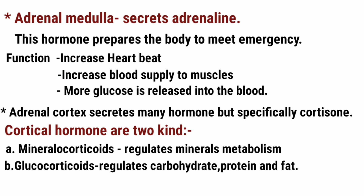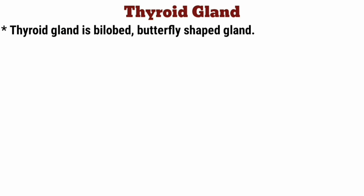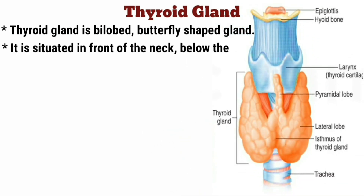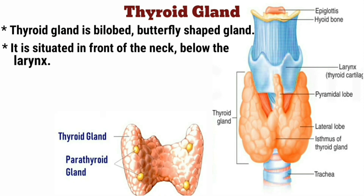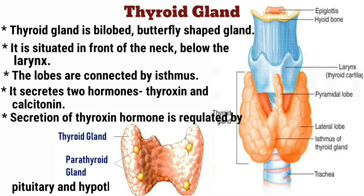The thyroid gland is a bilobed, butterfly-shaped gland situated in the front of the neck, below the larynx. The two lobes are joined by an isthmus. It secretes two hormones: thyroxine and calcitonin. The secretion of the thyroxine hormone is regulated by the pituitary and hypothalamus glands.